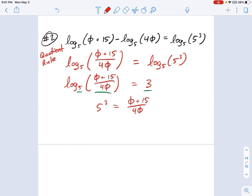So here we are at 5 cubed equals (φ + 15) / 4φ. The way you solve this is, first of all, we need to get rid of fractions. 5 cubed is 125. I'm going to multiply each side by this 4φ. So we get 125 times 4φ equals φ + 15. Now we're going to say, what's 125 times 4? That's 500φ equals φ + 15.